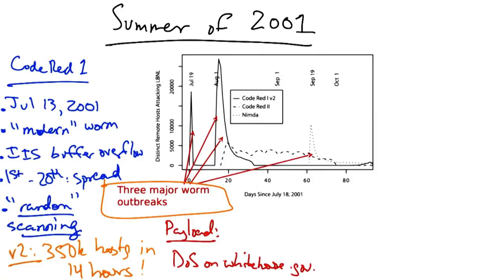But a bug in the coding caused the worm to die on the 20th of each month. If the victim's clock was wrong, however, the worm would actually resurrect itself on the first.